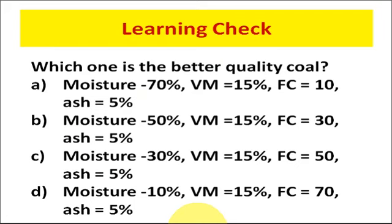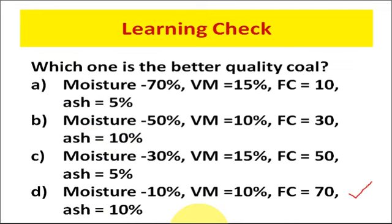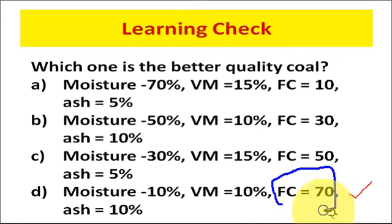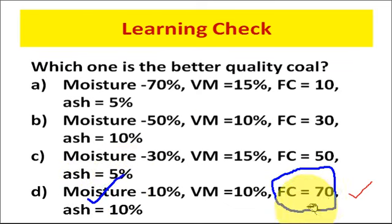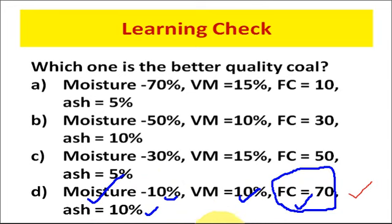It is time for a learning check. Read the question, pause the video, and think about the correct option. Which one is the better quality of coal? The correct option is D, because in option D the fixed carbon percentage is maximum and moisture content is minimum. For good quality coal, fixed carbon percentage should be high, and moisture content, volatile matter, and ash content should be low.